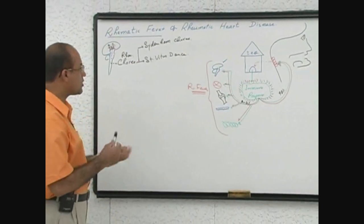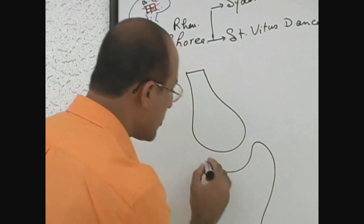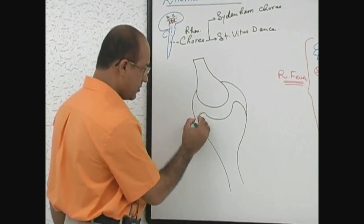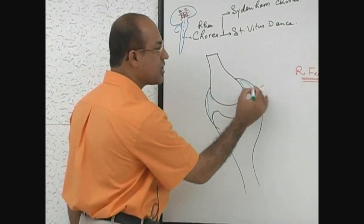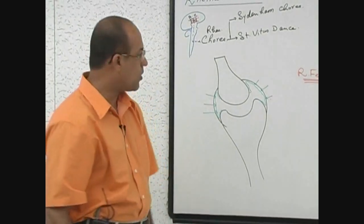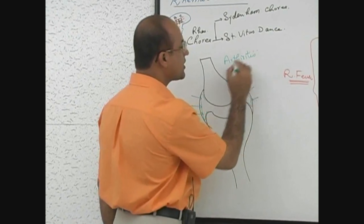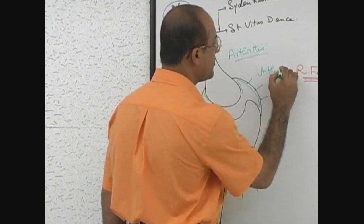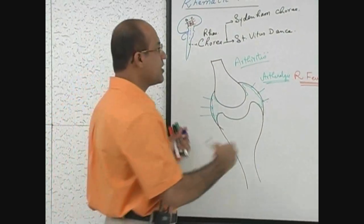Now let's talk about joints. These patients develop arthritis or arthralgia. The immune system cross-reacts with the synovial membranes, causing them to become inflamed, producing severe joint inflammation — that is arthritis. But if the patient complains only of pain in the joint with no other features, we call it arthralgia.